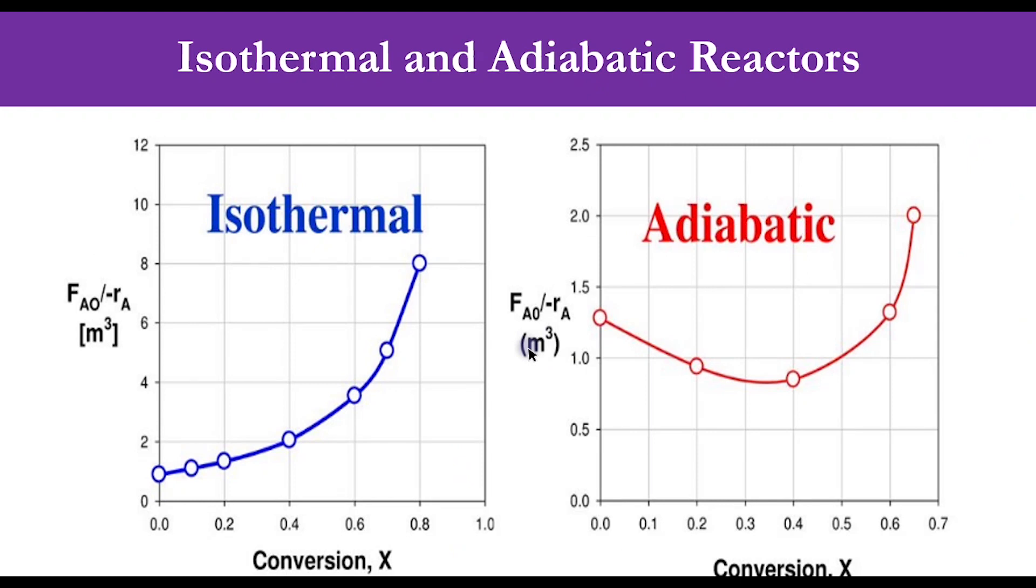But what happens if we move to an adiabatic system? For the isothermal system, it was a continuously increasing trend. But for the adiabatic system, you can see it first decreased and then increased. The reason is that for exothermic reactions that are not carried out isothermally, the rate usually increases at the start. So with this rate increase, this overall value F0 over minus RA will decrease accordingly, going down because the reaction temperature increases.